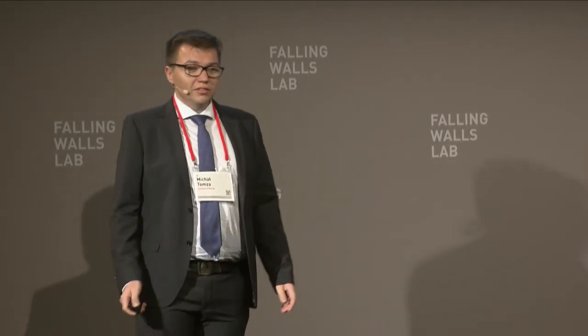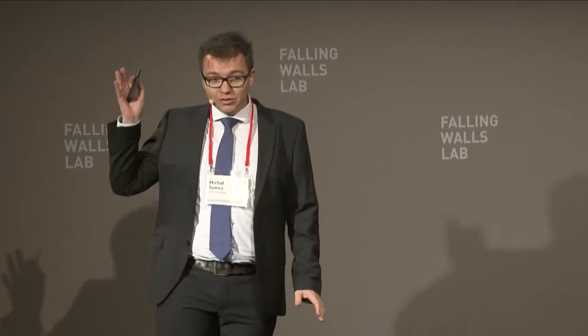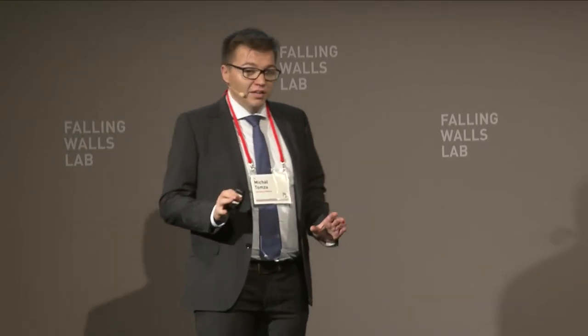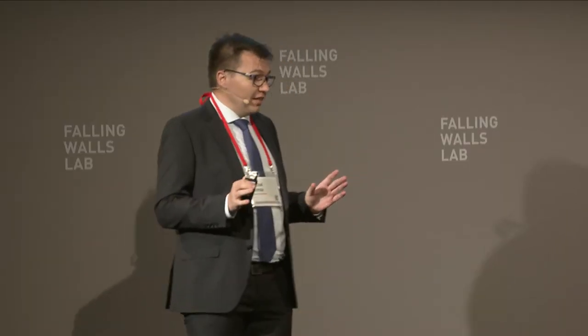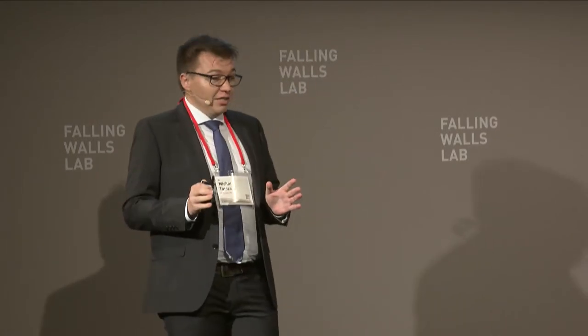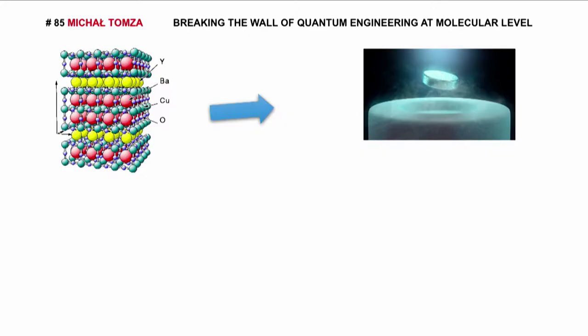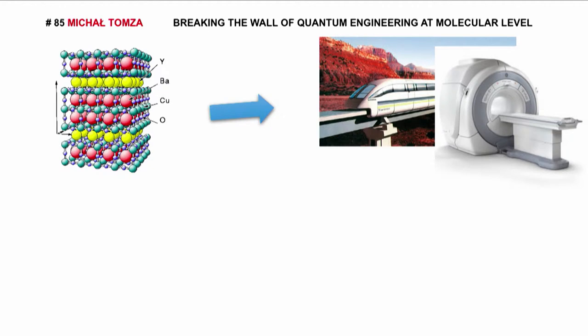In life, we are surrounded by different materials, which consist of atoms arranged in a specific way at the microscopic level. Depending on their microscopic structure, materials have different, sometimes very sophisticated properties. Superconductivity is one of them. And materials with this property can be useful, for example, for the construction of ultra-fast levitating trains or MRI scanners, essential in modern medicine.